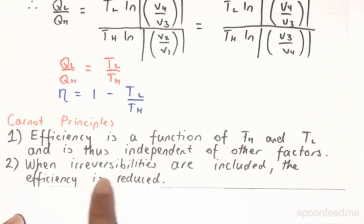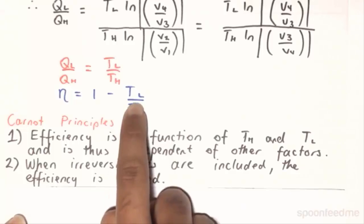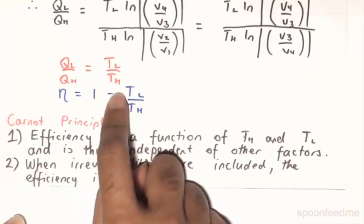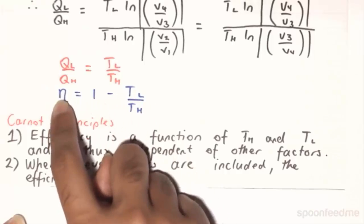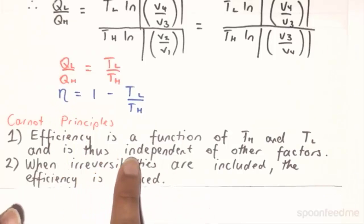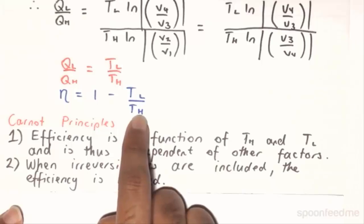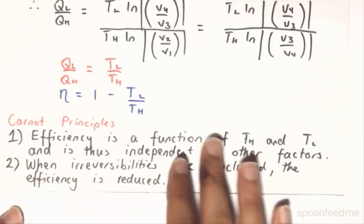So when the irreversibility is included, then the TL and the TH will become closer together. And as the TL and TH become closer together, this value here becomes larger. So 1 minus a larger number means that this efficiency value will be small. Conversely, if we have a situation where the TL and TH are very, very different, then we can have a very good efficiency.